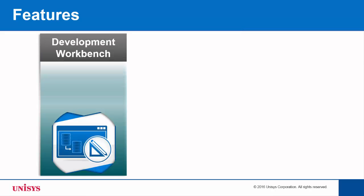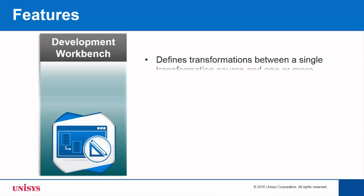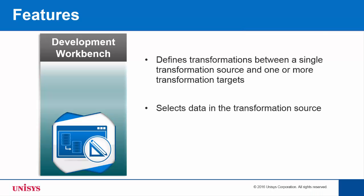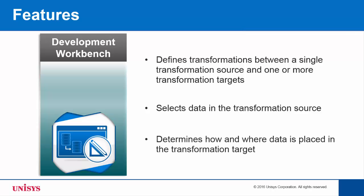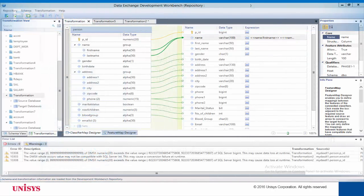Development Workbench, or DDW, is an application designed for defining transformations between a single transformation source and one or more transformation targets. In DDW, you can select the data in the transformation source and determine how and where each of the data is placed in a transformation target. This is a snapshot of the DDW graphical user interface.